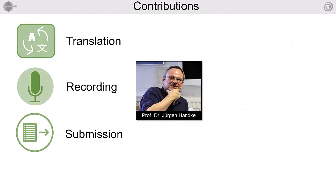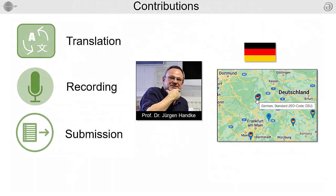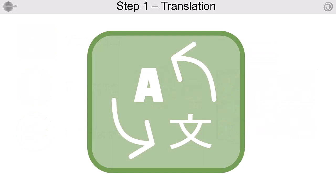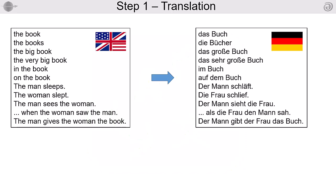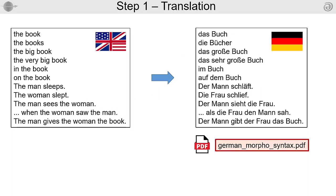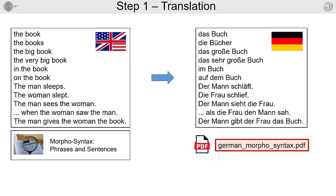I'll demonstrate it using my mother tongue. Step 1: Translation. Please translate these 11 English phrases and sentences into your language and save the result as PDF. The phrases and sentences can be found in the video description and in the morphosyntactic glossary on the VLC.